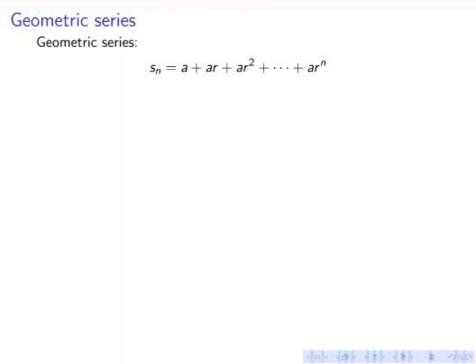Now for S_n we can actually find a closed formula. So here I write down S_n again. This is a geometric series. Now I multiply this by r. This is a trick.